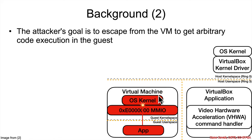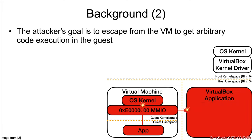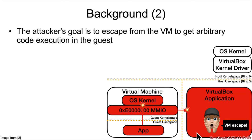Take over the kernel, utilize the memory-mapped IO interface, and send attacker-controlled data to the application. And then, boom — compromise the application, get code execution in the host in user space, and they have successfully escaped the VM.